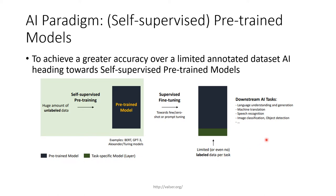Then we perform the downstream AI tasks. This can range from language understanding and generation, machine translation, speech recognition, image classification, and object detection.